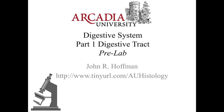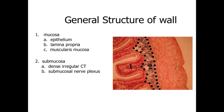Hello, and welcome to Part 1 of our Digestive System Pre-Lab Activities. In Part 1, we're going to take a look at the Digestive Tract. The Digestive Tract is essentially a tube-like organ that runs from the oral cavity to the anal cavity — from the mouth to the anus — with food passing through the center, through the lumen, being transported along its length.